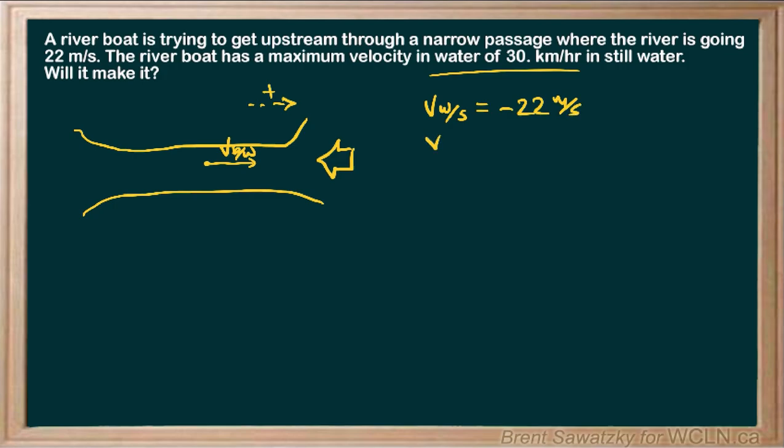And then the velocity of the boat relative to the water, we're told, is 30 kilometers per hour and units don't align. So let's fix that. 1,000 meters per kilometer and 1 hour per 3600 seconds. A little dimensional analysis here. Let's double check that we got it right. Kilometers cancel out. Good. Hours cancel out. Good. And we're left with meters and seconds. Okay, perfect. So that comes out as 8.3 meters per second.